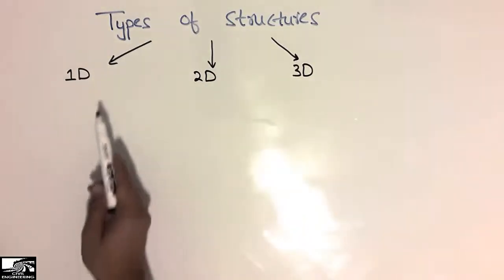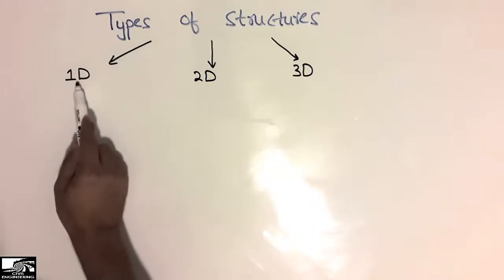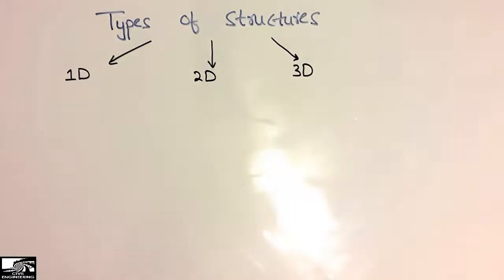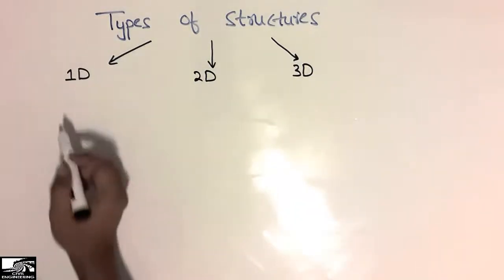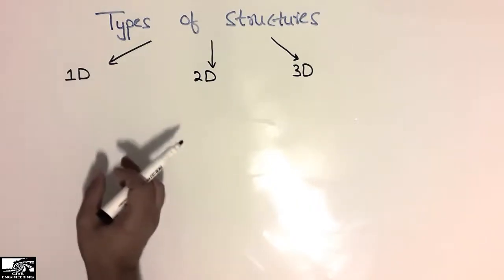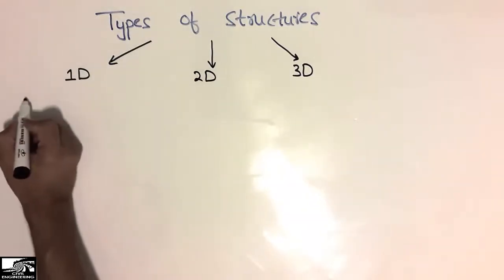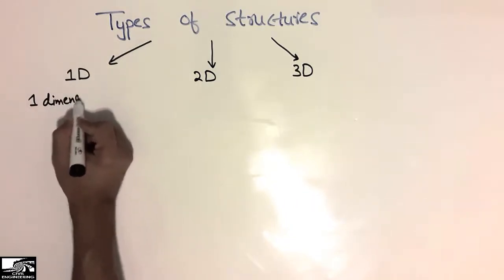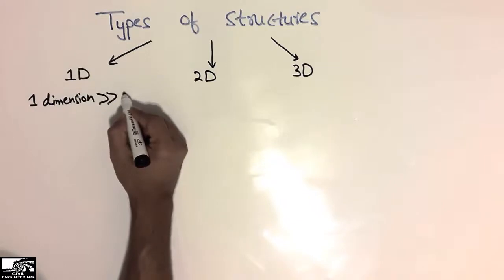There are three types of structures on a dimensional basis: the one-dimensional structure, the two-dimensional structure, and the three-dimensional structure. The one-dimensional structure is defined as the type of structure in which one dimension of the structure is much larger than the other two dimensions.